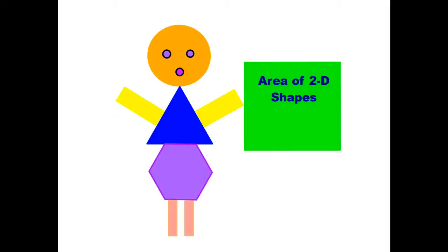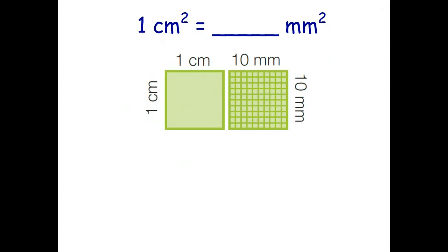Hello students. In this next series of videos we're going to show you how to find the area of two-dimensional shapes. Before we do that, occasionally we have to convert square units — for example, square centimeters into square millimeters, or square meters into square kilometers. I'll show you my preferred way of doing these conversions. These are called area conversions.